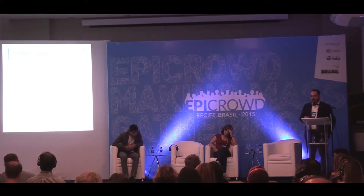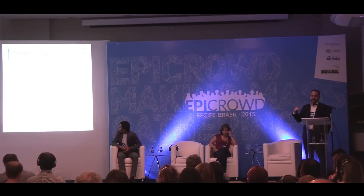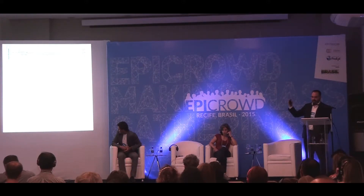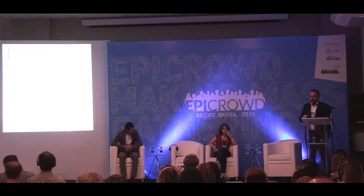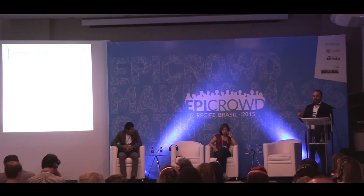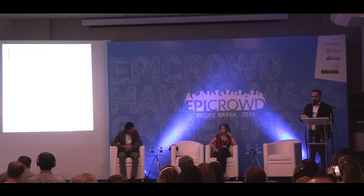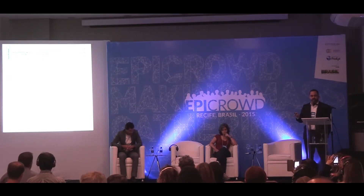This is a PRISMA flowchart — required whenever you do a systematic review — showing how we down-selected the literature. At the very top we started with tens of thousands of citations, and at each step we reviewed articles until we reached the final selection. In this paper we narrowed it further to the list of select agents in the U.S. at that time, which are notifiable diseases and a bit broader. In the end, we found 44 papers that we reviewed in detail.